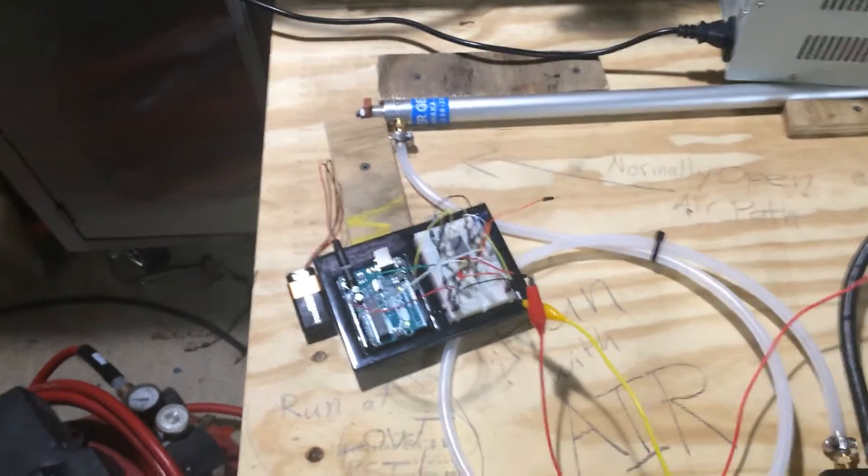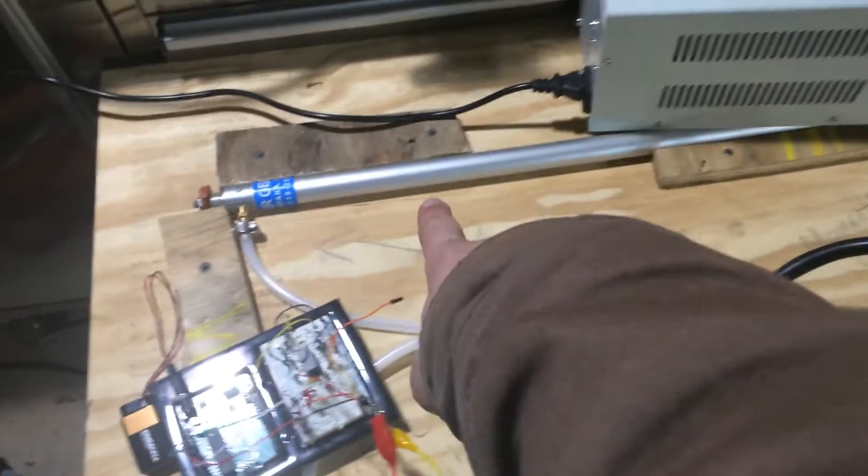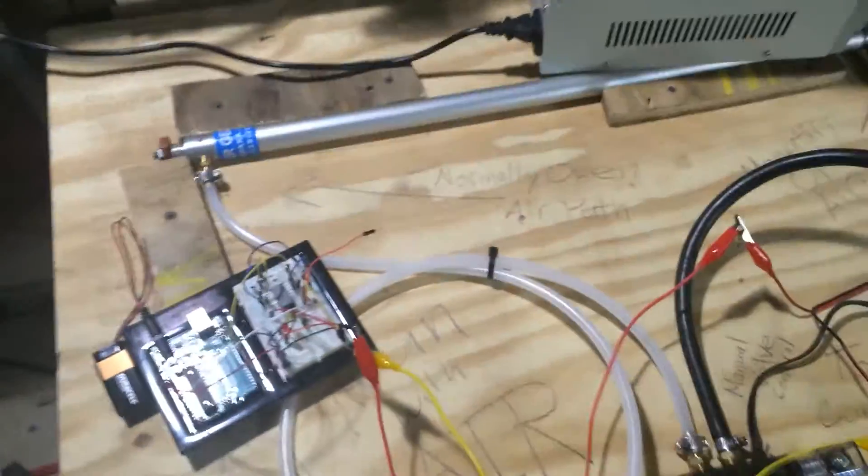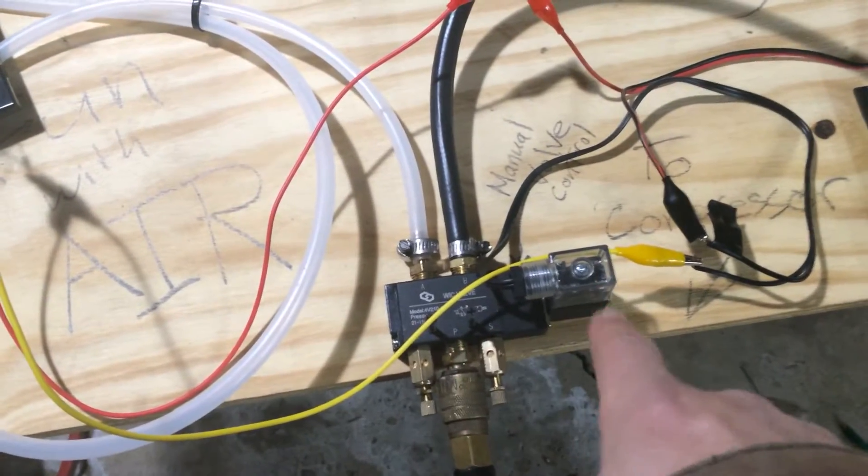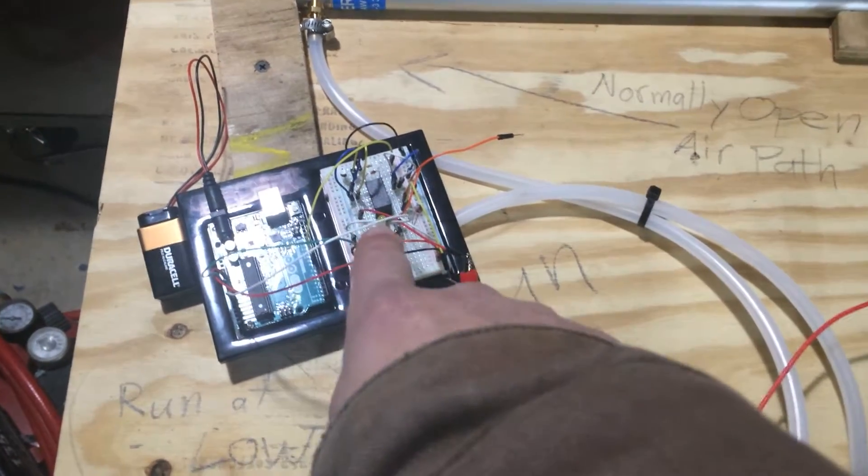What you are looking at here is an Arduino powered by a 9-volt battery and a bi-directional air cylinder, which is hooked up to a two-way air valve, which is 12-volt. And then that Arduino is controlling a transistor, which controls a relay.